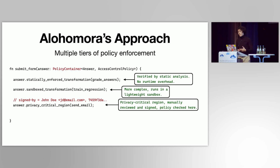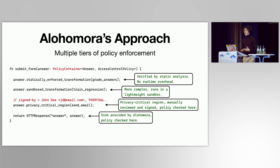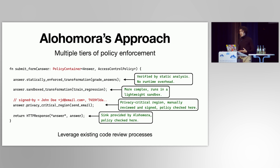This signature is verified at compile time. However, since we do not know which data would enter that region, a policy check is also called at runtime to verify that releasing the data is permitted by the policy. Finally, if data flows into one of the sinks annotated by Alohomora, we treat it as safe and reviewed, but still call a policy check since we don't know exactly which data could flow into the sink. In total, we leverage existing code review processes to provide practical guarantees for developers.